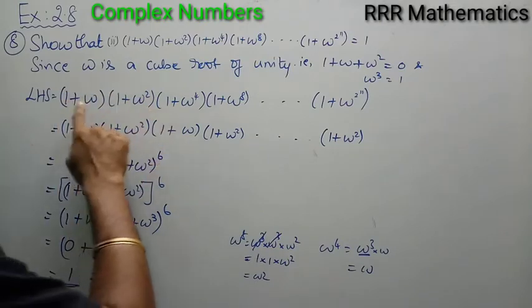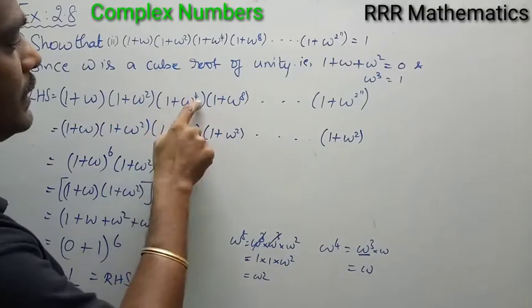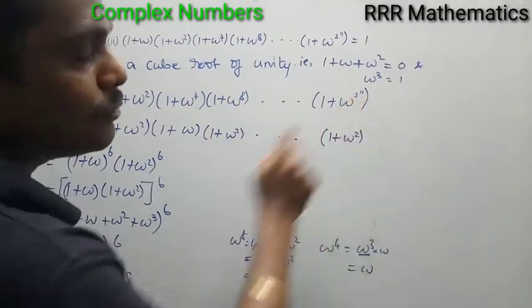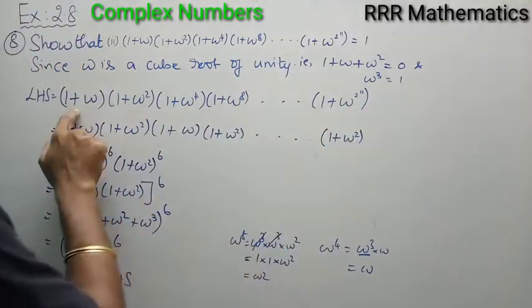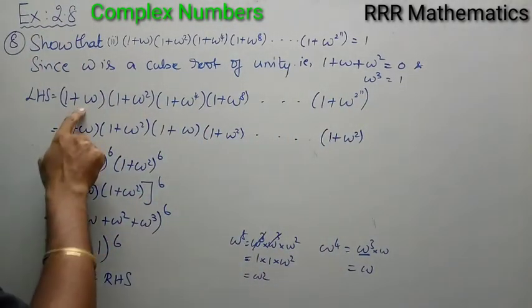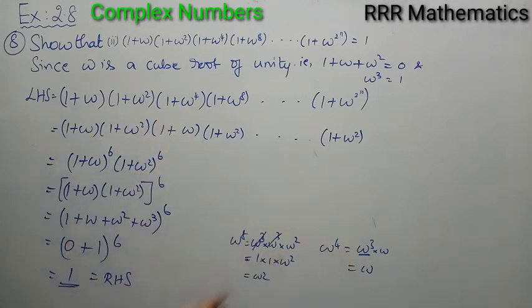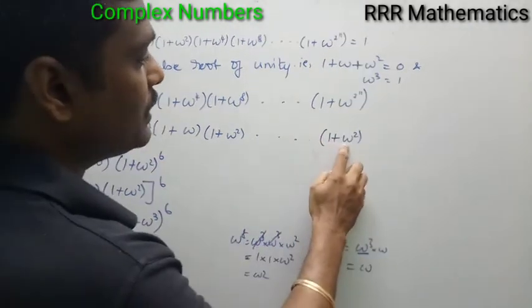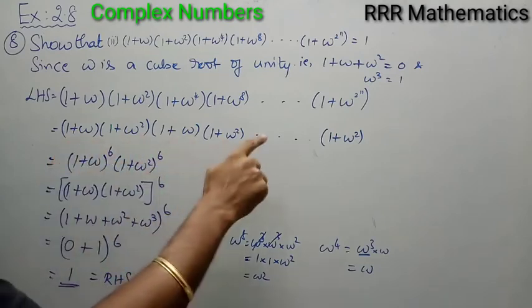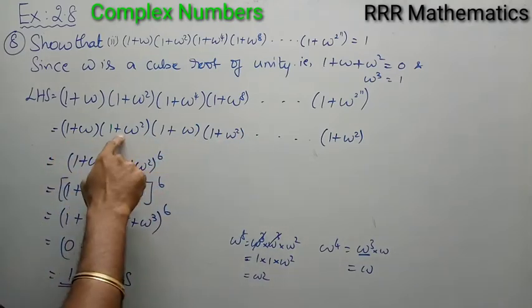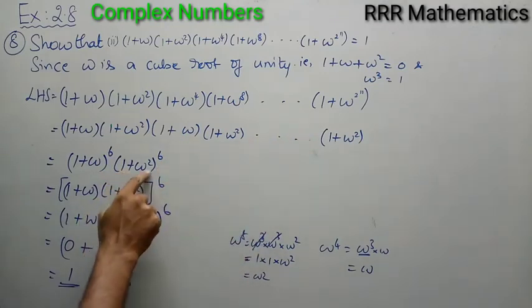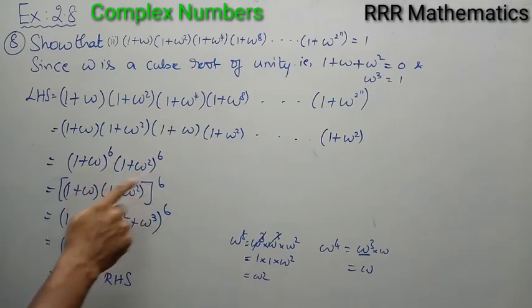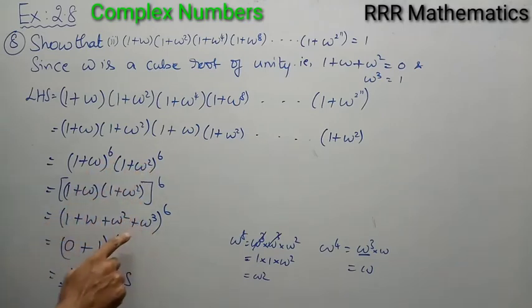To recap: the expression has 12 factors (from 2^1 to 2^11 gives 11, plus the first = 12). Reducing each power modulo 3 using ω³ = 1, the factors alternate as (1 + ω) and (1 + ω²). Since the 12th factor is even, we get 6 of each, giving [(1 + ω)(1 + ω²)]⁶. Simplifying gives 1 + ω + ω² + ω³ = 0 + 1 = 1, and 1⁶ = 1. That's all!